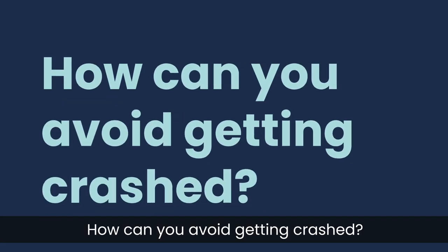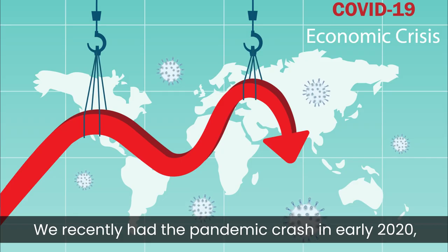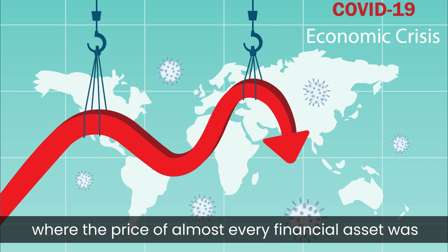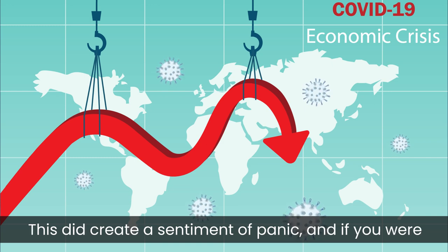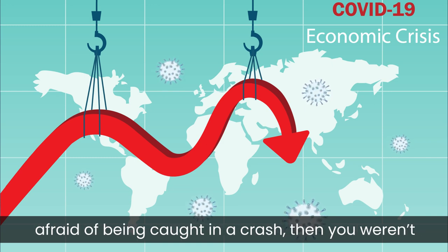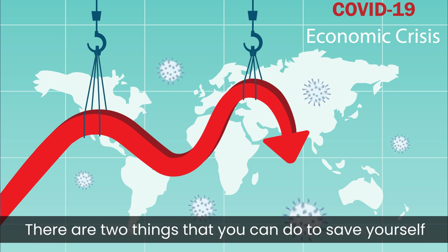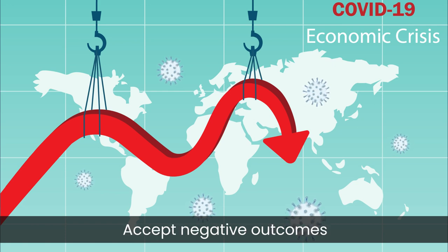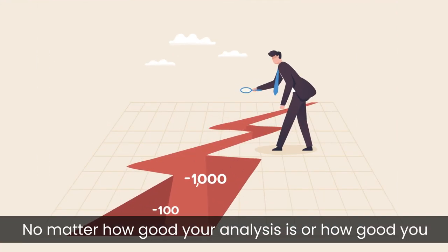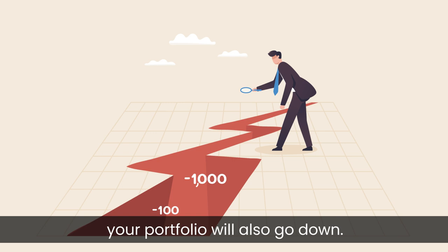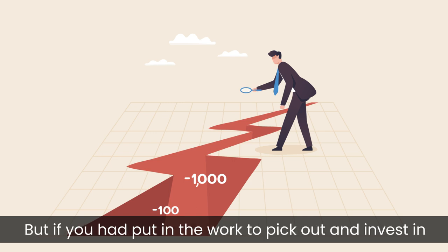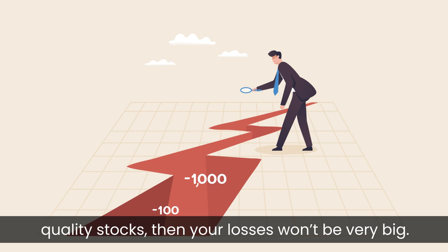How can you avoid getting caught in a crash? We recently had the pandemic crash in early 2020, where the price of almost every financial asset was falling daily. This created a sentiment of panic, and if you were afraid of being caught in the crash, you weren't alone. There are two things you can do to save yourself from such a bloodbath. First: accept negative outcomes. No matter how good your analysis is or how good you are at stock picking, when the overall market is down your portfolio will also go down. But if you've put in the work to pick quality stocks, your losses won't be very big.